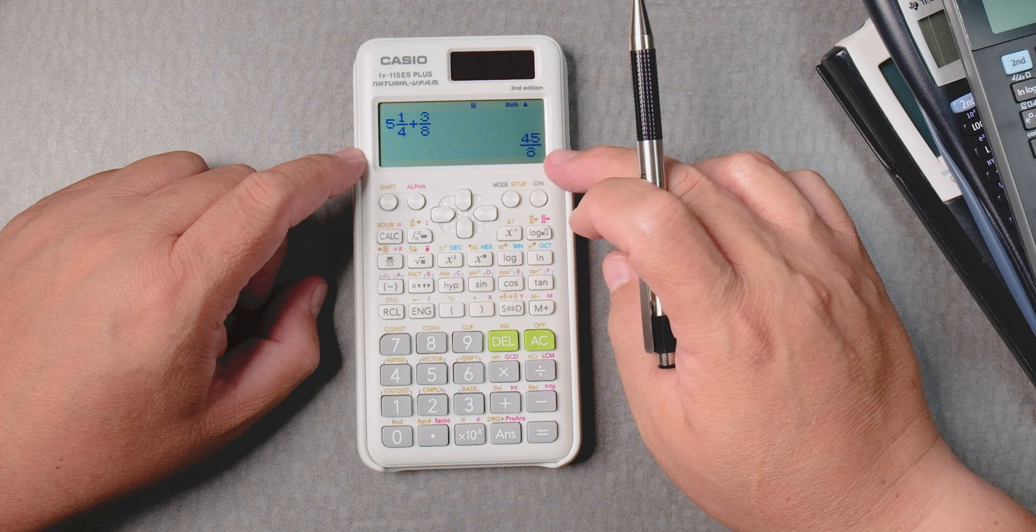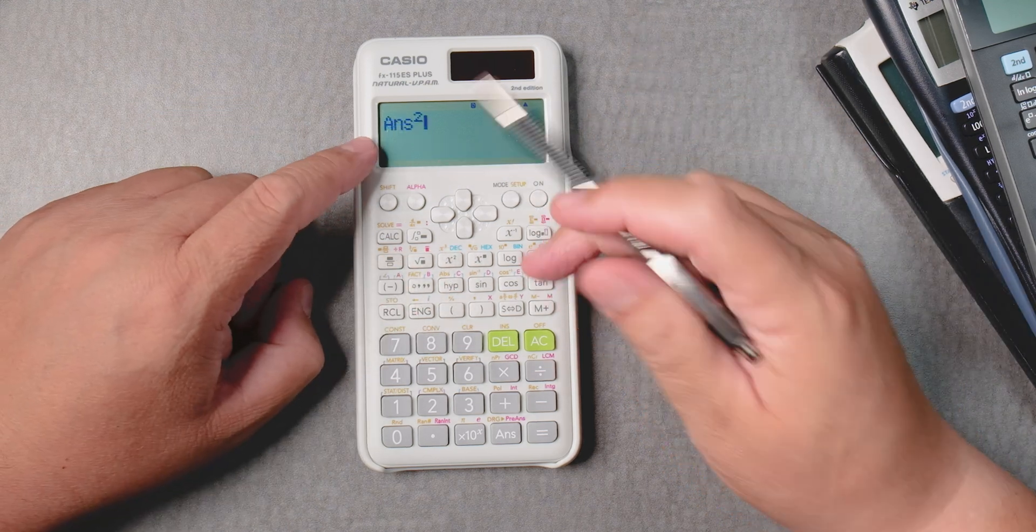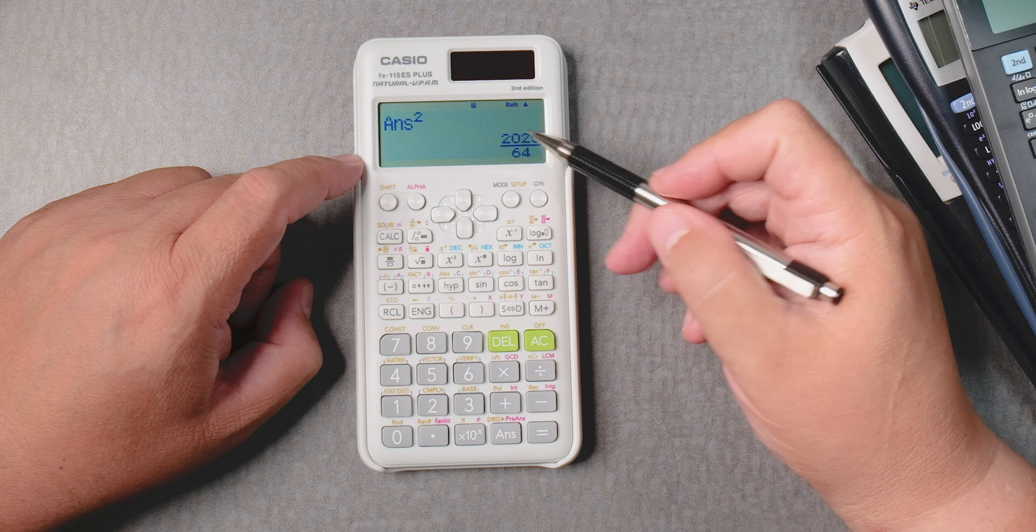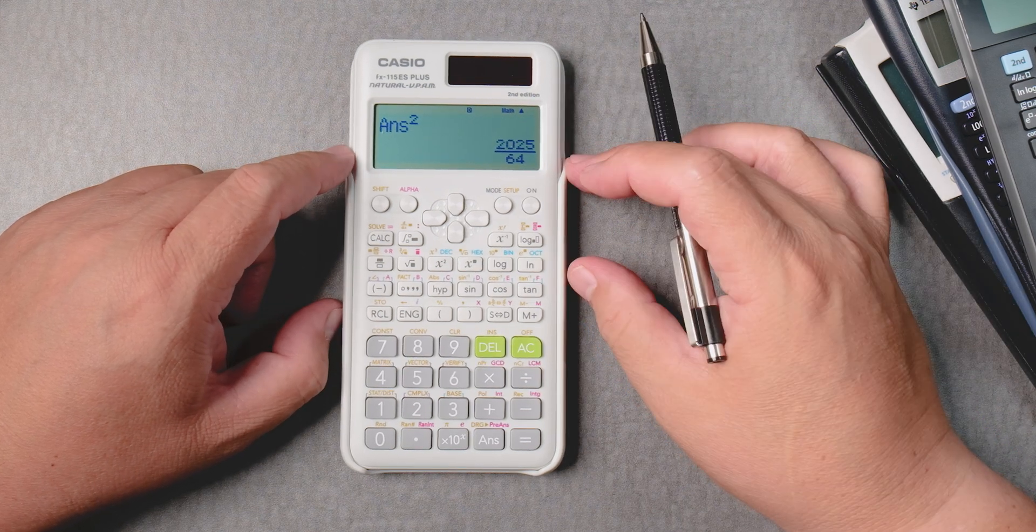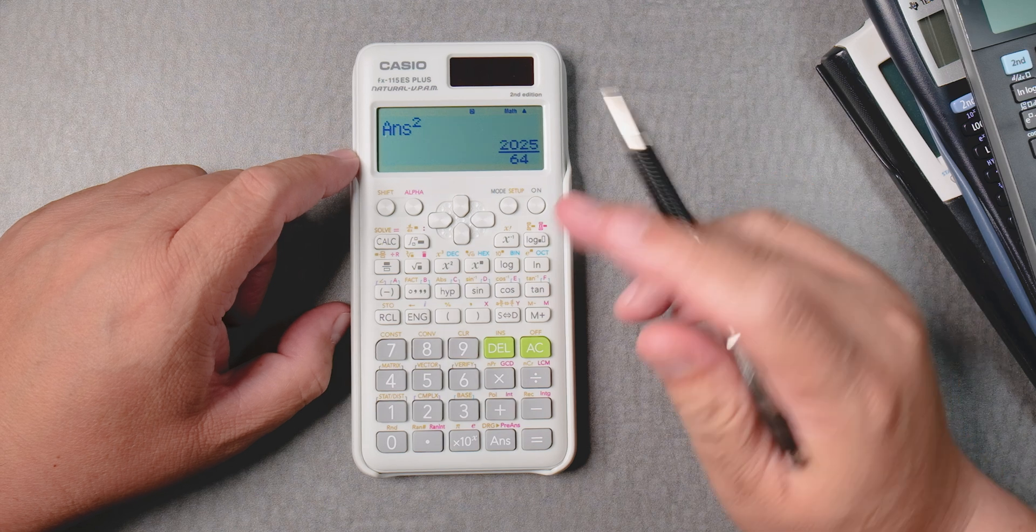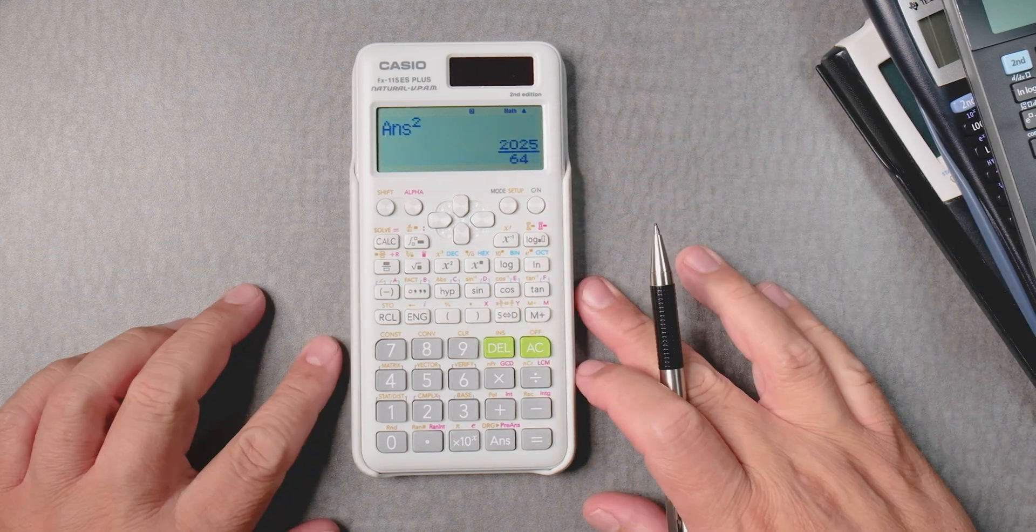You can take these and square them and such. If you press square, it's squaring the answer. And you press equals, it gives you a fraction answer, an improper fraction. And if you press SD, it gives you the number, the decimal value or equivalent.